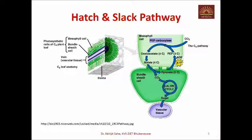This is the Hatch and Slack pathway, commonly called the C4 cycle. Hatch and Slack in 1966 worked out this biochemical pathway and observed that there are certain plants where carbon dioxide is fixed as a 4-carbon compound. These plants are called C4 cycle plants or C4 plants.